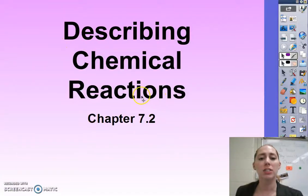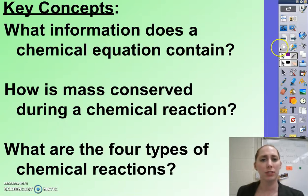This is Describing Chemical Reactions and correlates to Chapter 7.2 in your textbook. Your key concepts for this video are: what information does a chemical equation contain, how is mass conserved during a chemical reaction, and what are the four types of chemical reactions.